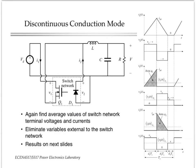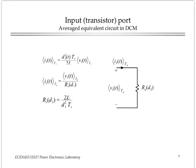Now, when the converter operates in discontinuous conduction mode, the process of deriving the average switch model is exactly the same, except, of course, the waveforms are different. Here we have the set of waveforms that describe the operation of the switch network in discontinuous conduction mode, and the process of averaging the waveforms over a switching period results in interesting results.